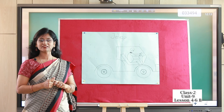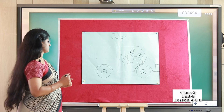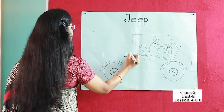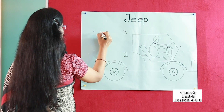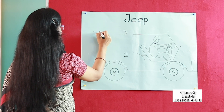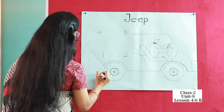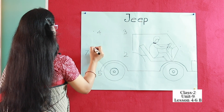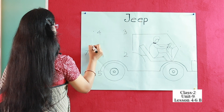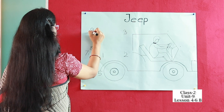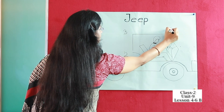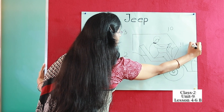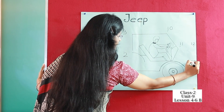Now I am going to write the numbers from 1 to 13: one, two, three, four, five, six, seven, eight, nine, ten, eleven, twelve, and last, thirteen.